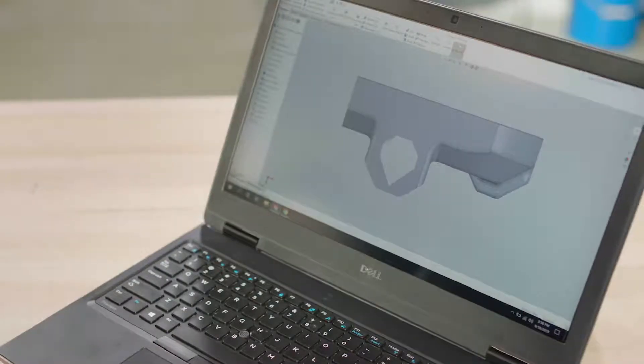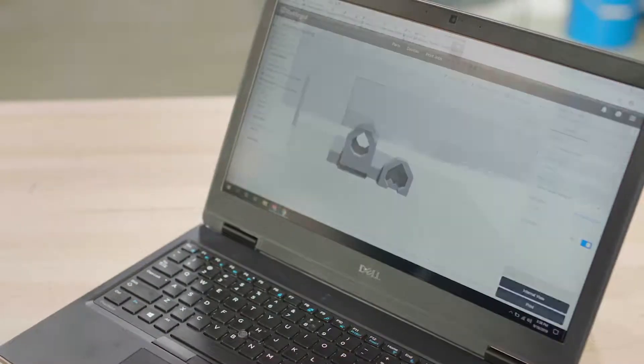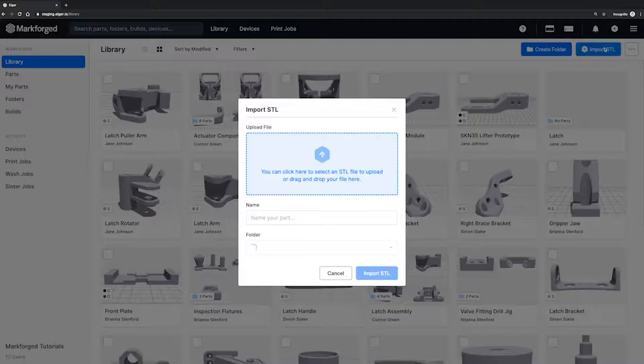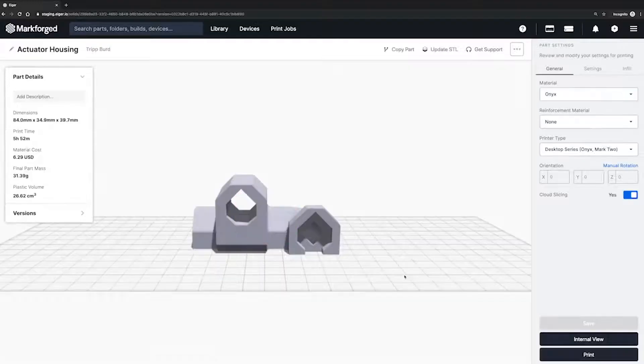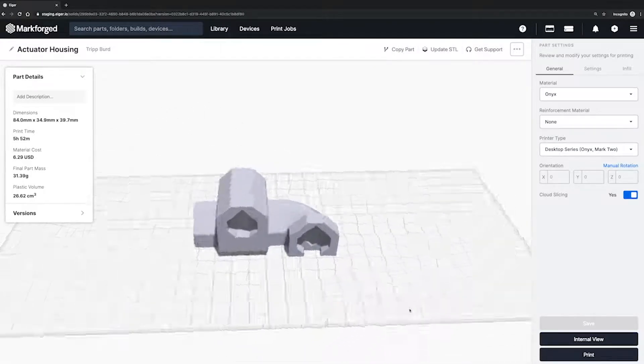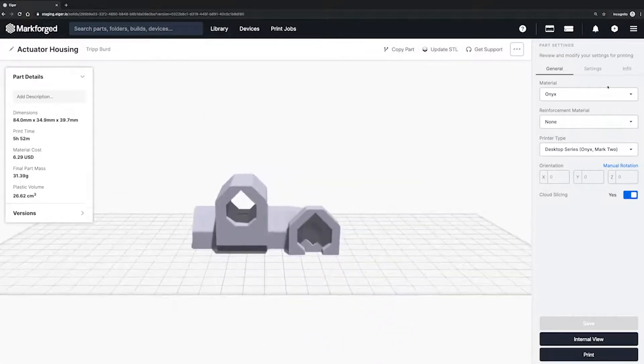First, let's start with CAD. You design your part, then export to STL, and upload into IGR. IGR is a cloud-based slicing and print management system that comes with every Markforge product. This automatically configures your part based on the material and printer you've selected.